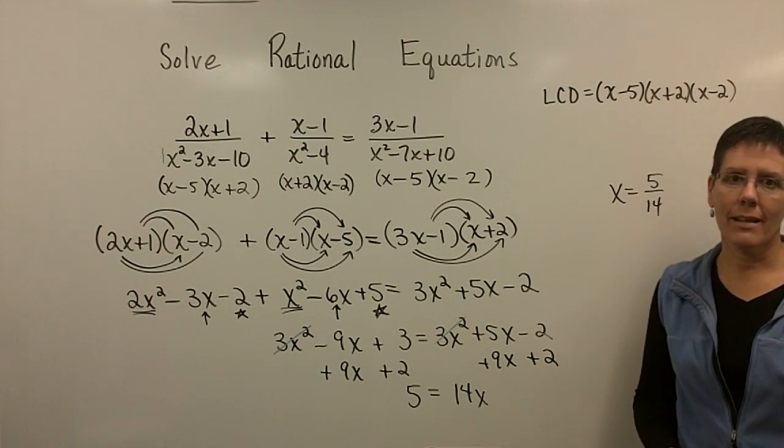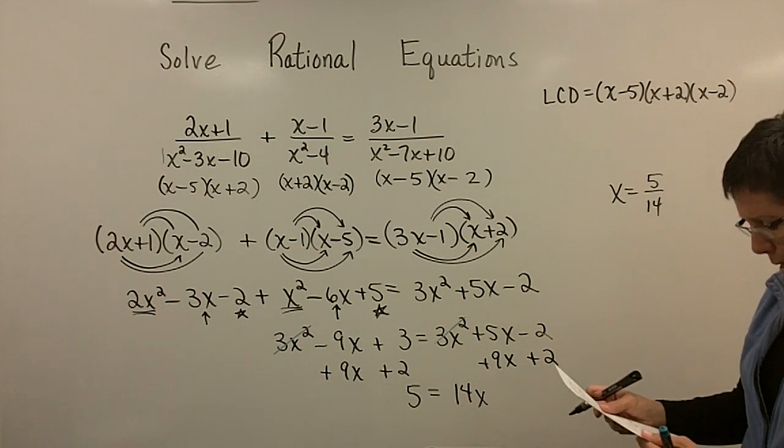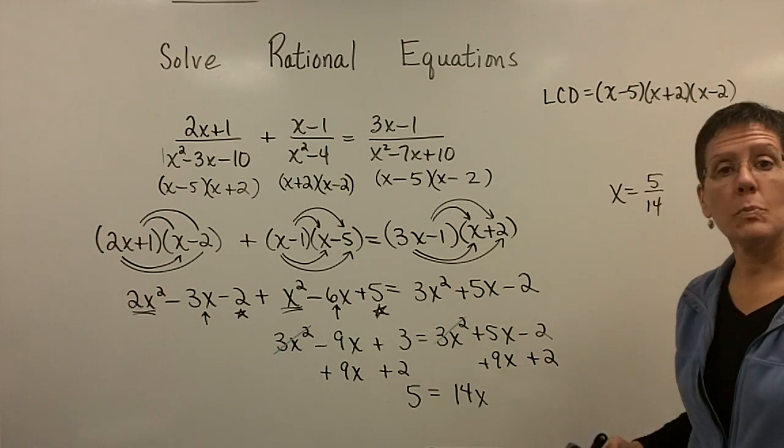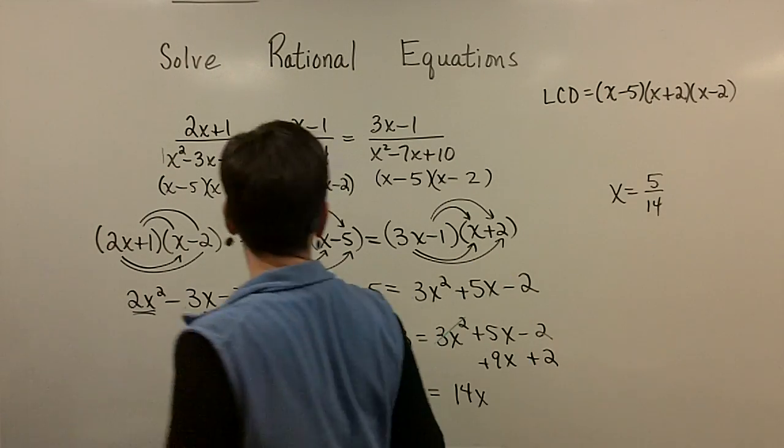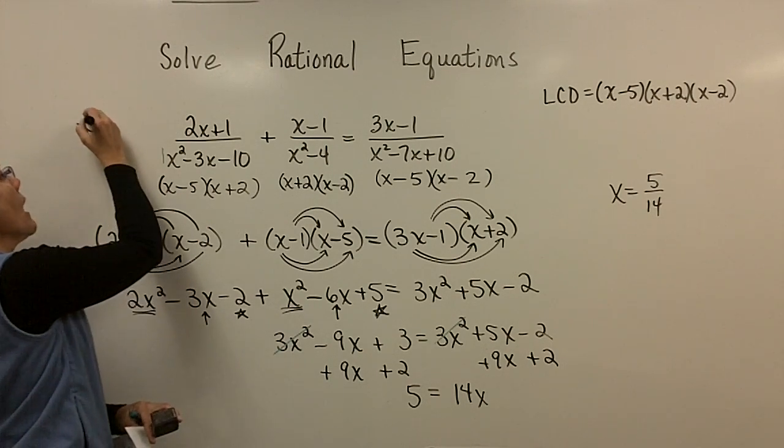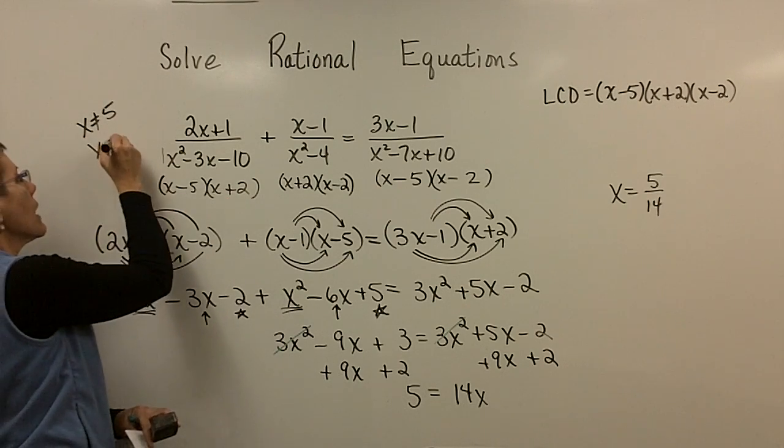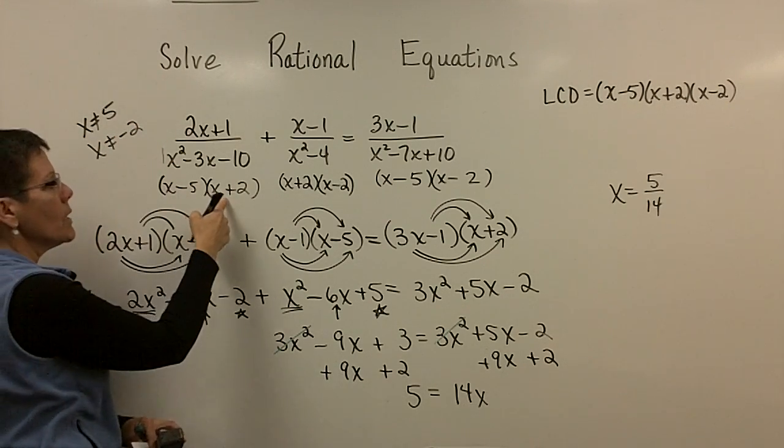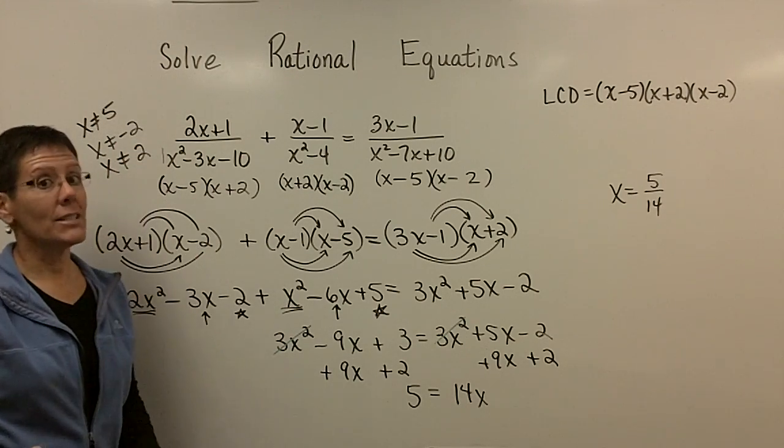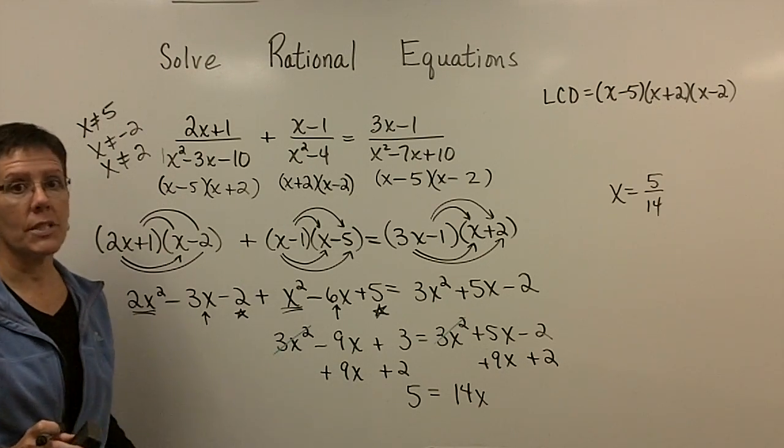I'm not going to check that. You saw what happened last time. That just takes a good bit of work. I did forget to mention, I'm sorry, that my restrictions on the domain for this one, x cannot equal 5 right there, x cannot equal negative 2, and then right here x cannot equal positive 2. My answer did not turn out to be any of those 3. My answer turned out to be 5/14.